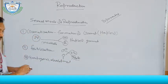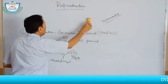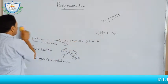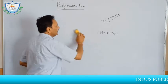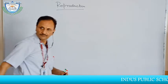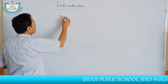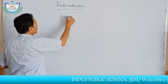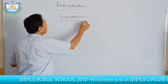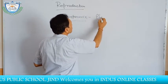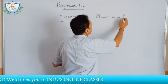Today we will discuss how angiospermic plants reproduce sexually. Angiospermic plants are plants that have flowers.